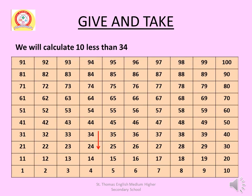We will calculate 10 less than 34. Less means subtraction, and 10 means 1 row. Start from 34 and move 1 row down to 24. So the answer is 34 minus 10 equals 24.